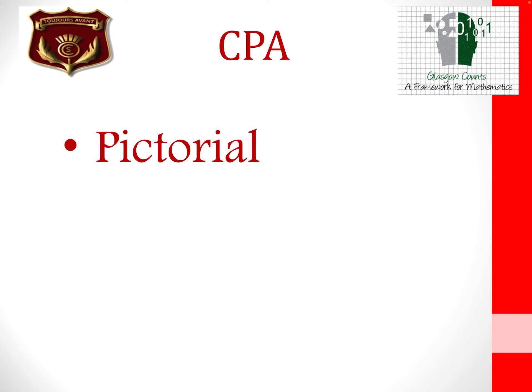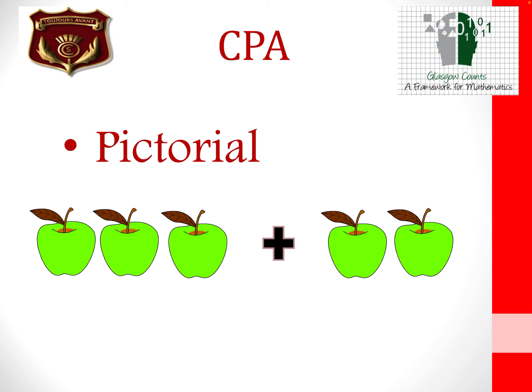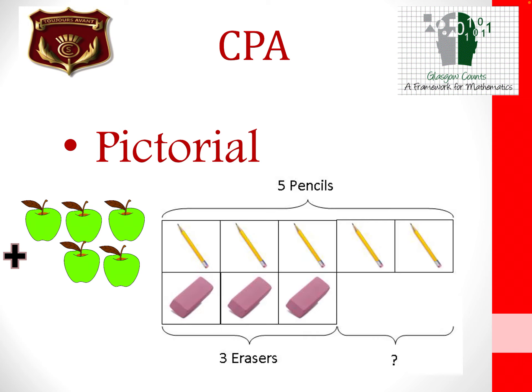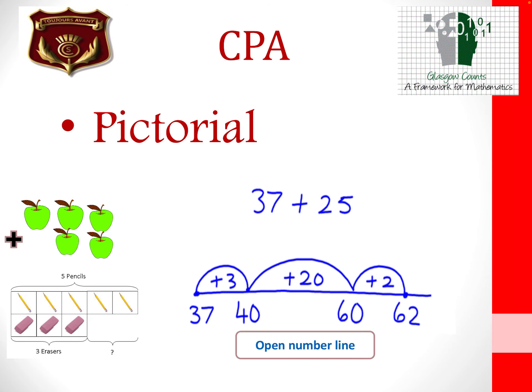The next stage in the model is the pictorial, sometimes known as the seeing stage. Children will be encouraged to draw a representation of the problem, which will help them visualize, understand and ultimately solve the problem. Examples of pictorial representations could be drawing three apples then another two apples to show the sum 3 add 2, or using a bar model to help them identify which process they should be using, or using an open number line to help them calculate a variety of sums.